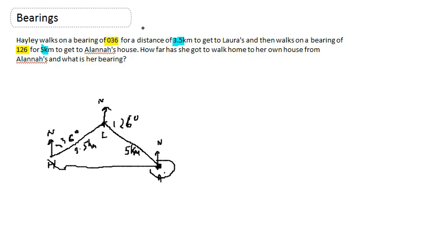The first thing to realize is these two north lines are parallel. Therefore, I can work out this angle here because those two angles are co-interior, so that's 144 degrees, because co-interior angles add up to 180. So that's 144.